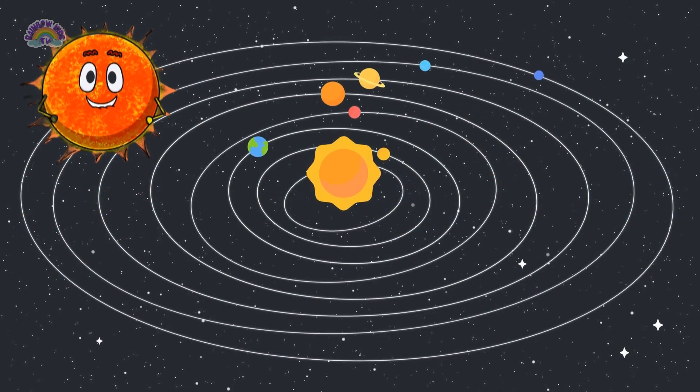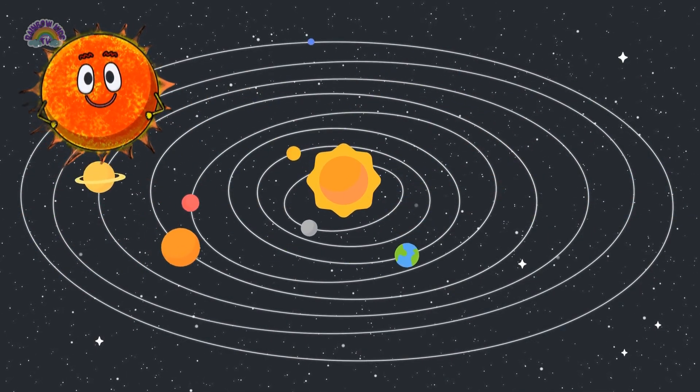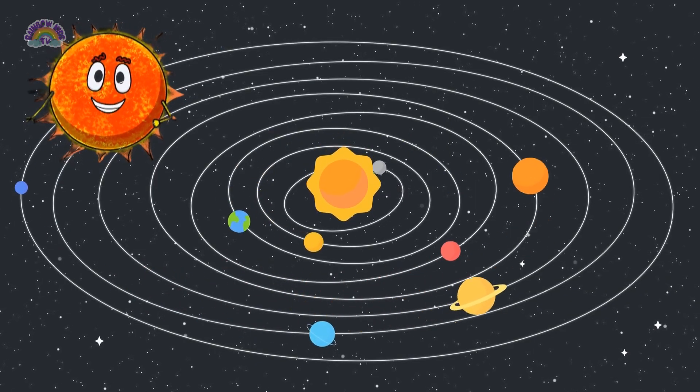This is our solar system. The eight planets go around the Sun.